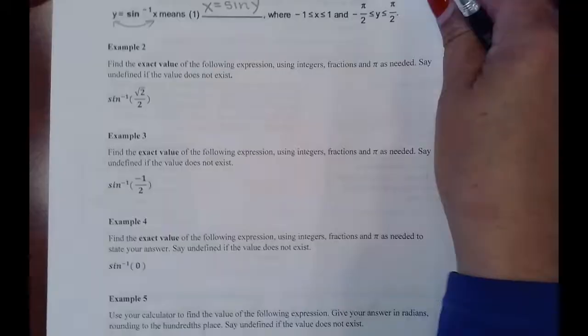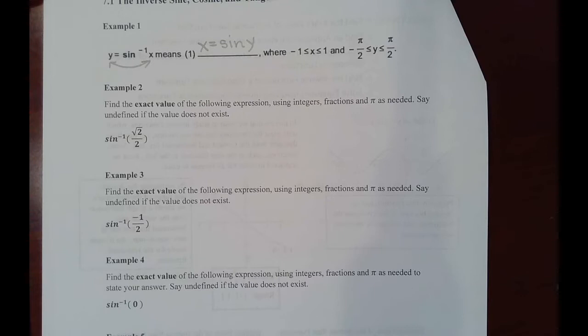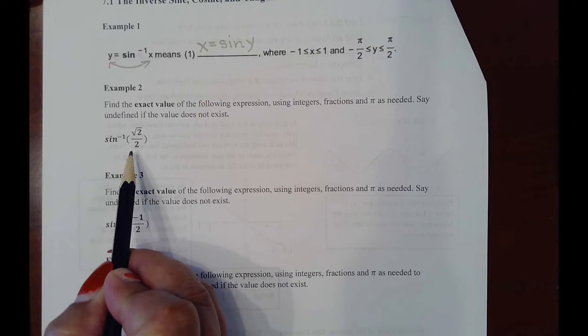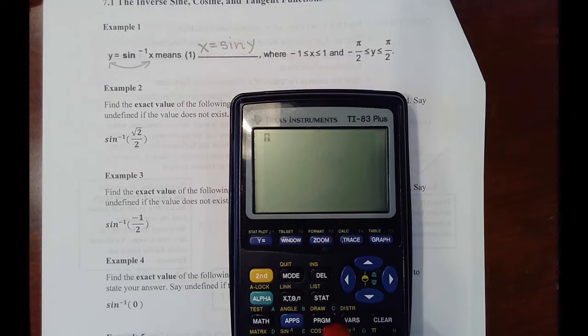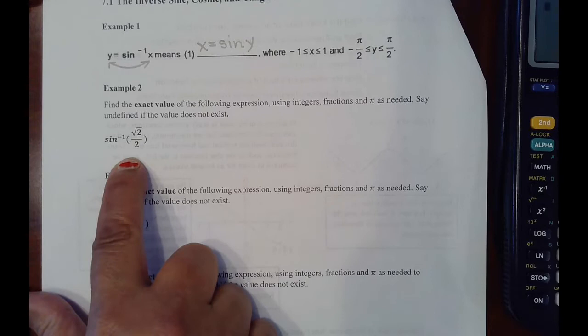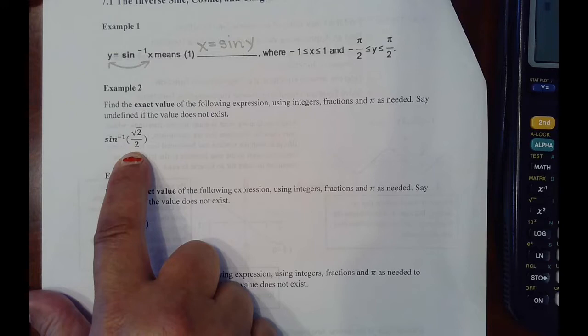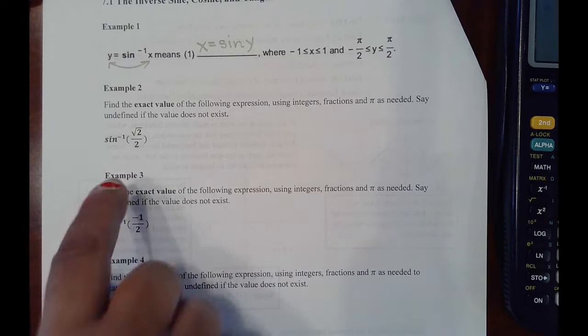In example two we start to work with values involving inverse. The value they're giving you, square root of two over two, is between negative one and one — it's definitely a number between negative one and one, so this problem is a go. You'll actually be able to find a value for this problem. If they give you a value outside the interval negative one to one, you can't even move forward because it's undefined. This is only defined if the argument is between negative one and one.